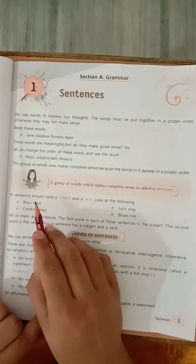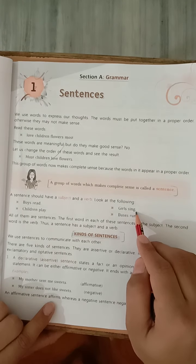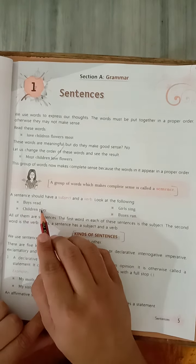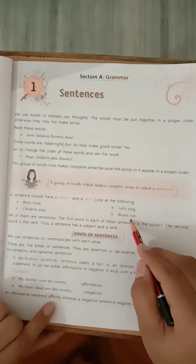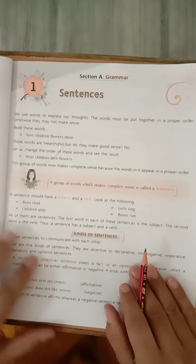A group of words which makes complete sense is called a sentence. Jo bhi a group of words, matlab jo words ko ek saath group mein likhte hain, unko sentence bolte hain aur jo a complete sense, uska jo meaningful sense nikalta hain, usko hum sentence bolte hain, okay? Here examples are given: boys read, jaise boys kya kar rahe hain? Read kar rahe hain. Girls sing, girls kya kar rahe hain? Gaana gaari hain. Children play, children kya kar rahe hain? Khel rahe hain. Buses run, aise karke ye examples hai, okay?